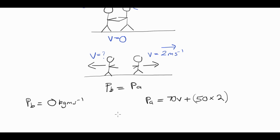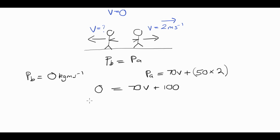P before must equal P after, which means zero equals 70V plus 100, because 2 times 50 is 100. Rearranging, negative 70V equals 100, which means V equals 100 divided by negative 70.